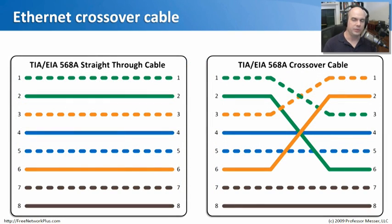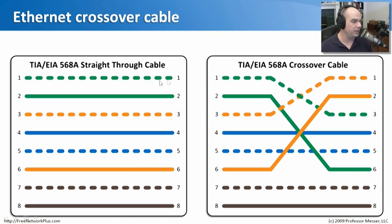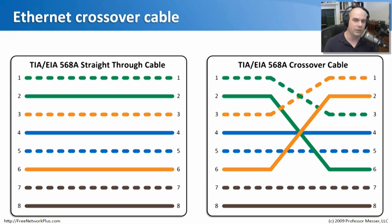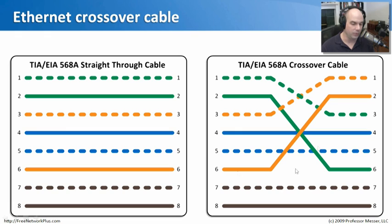Another type of cable you may see used, especially in ethernet networks, is an ethernet crossover cable. The crossover cable is pinned a very specific way — this is not just crossing over every other cable. Normally when you connect two devices, you're connecting them in straight-through mode where pin one goes to pin one, pin two goes to pin two, and so on. A crossover cable takes the transmit side and reverses it over to the receive side so that you can directly connect two ethernet devices. Pin one goes to pin three, pin two goes to pin six, three goes to one, and six goes to two.